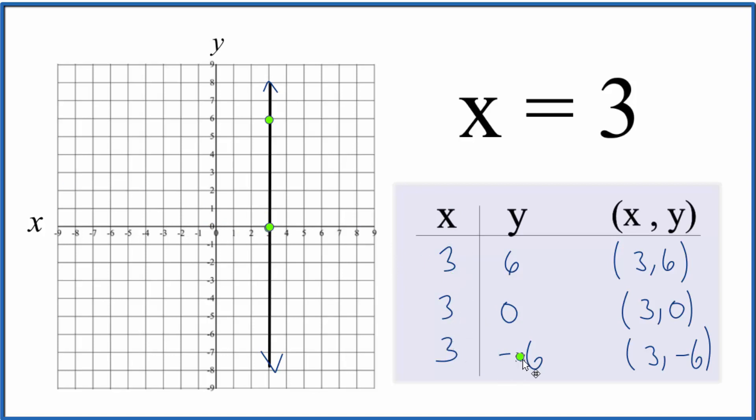And then x is 3, y is negative 6. 3, negative 6. That makes this the graph for x equals 3.